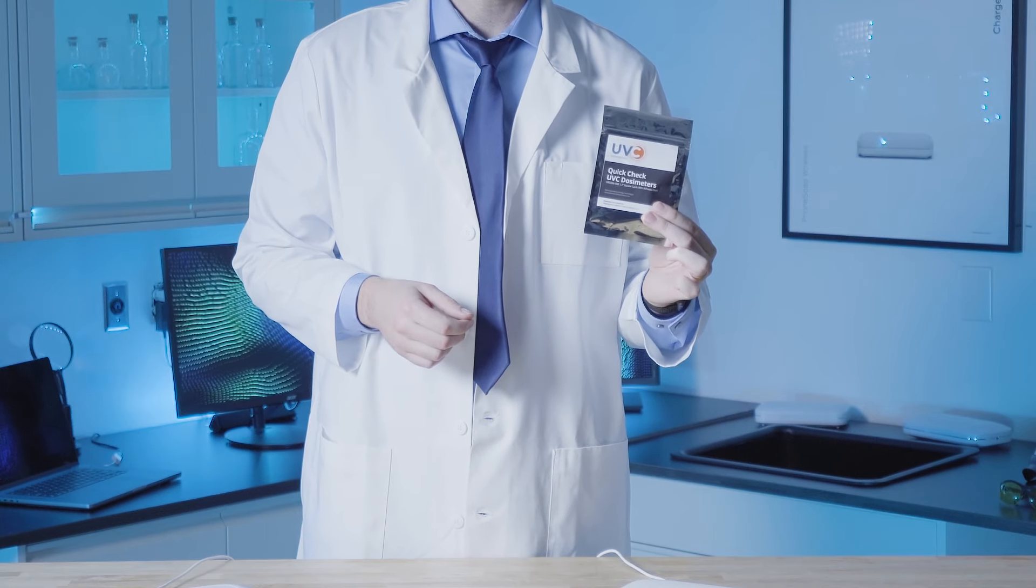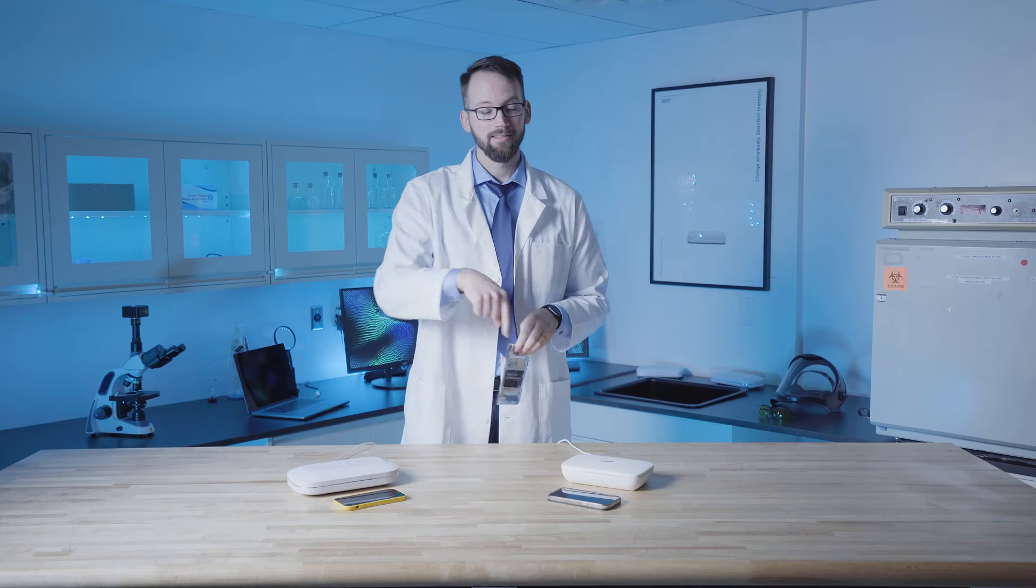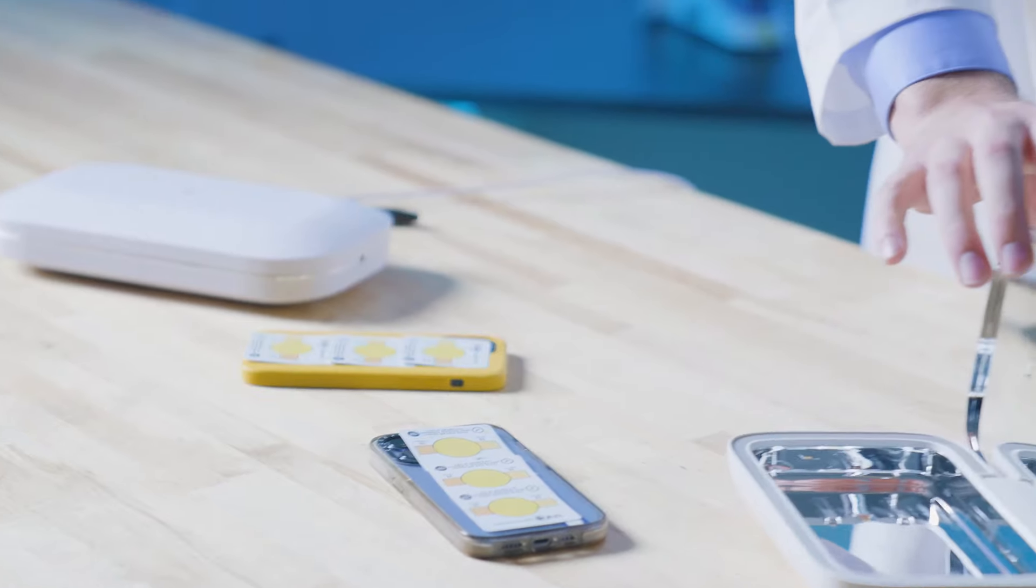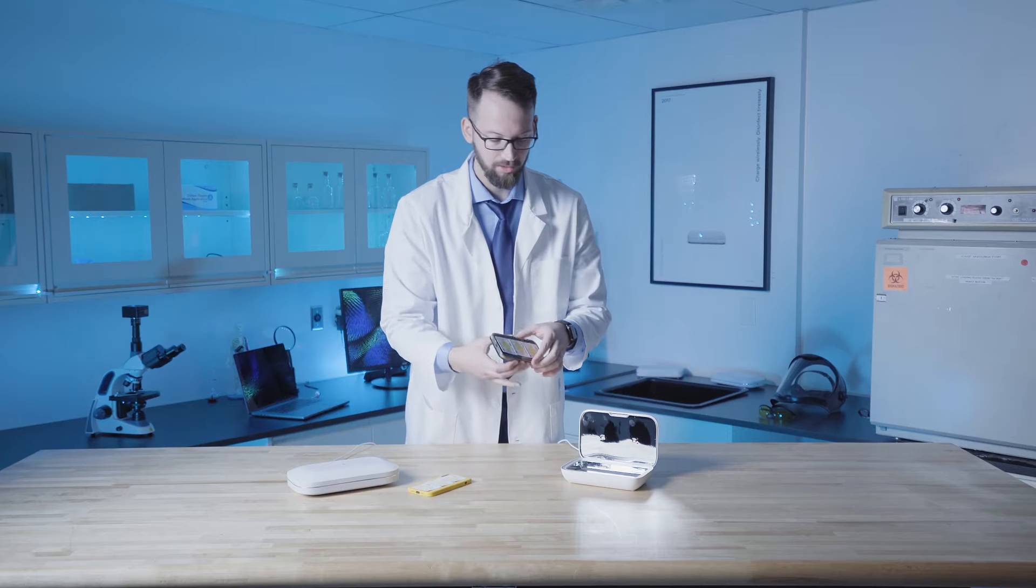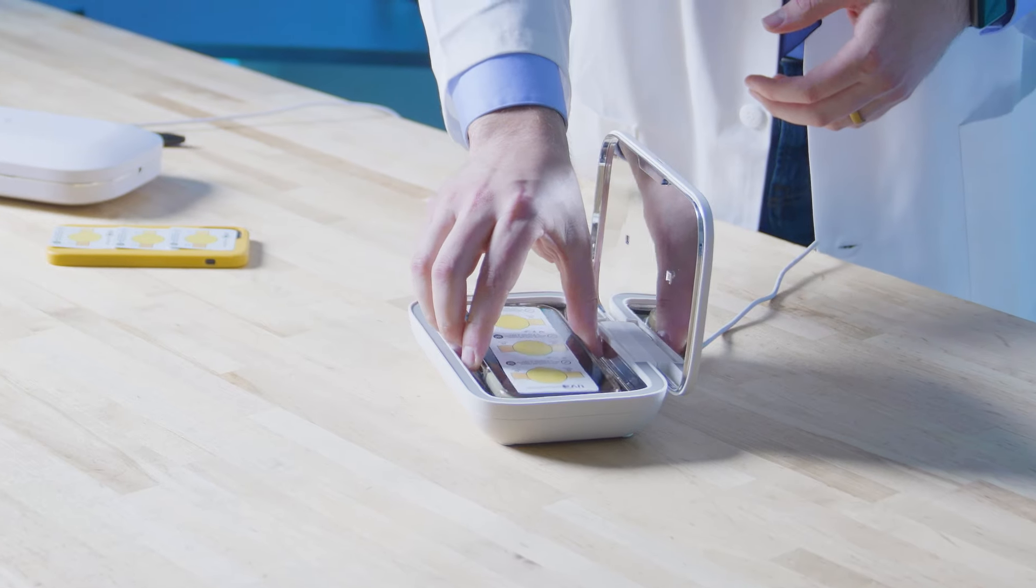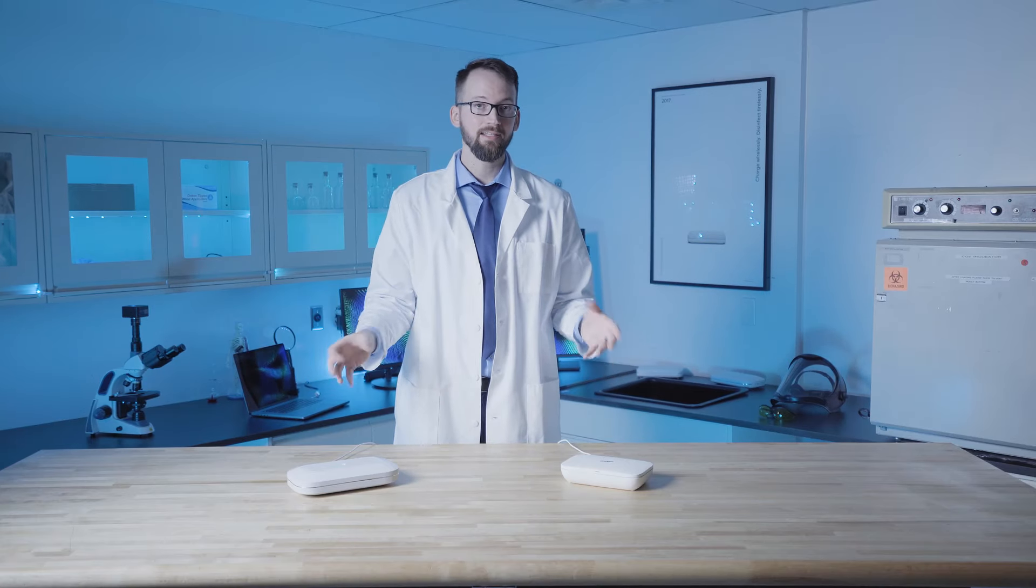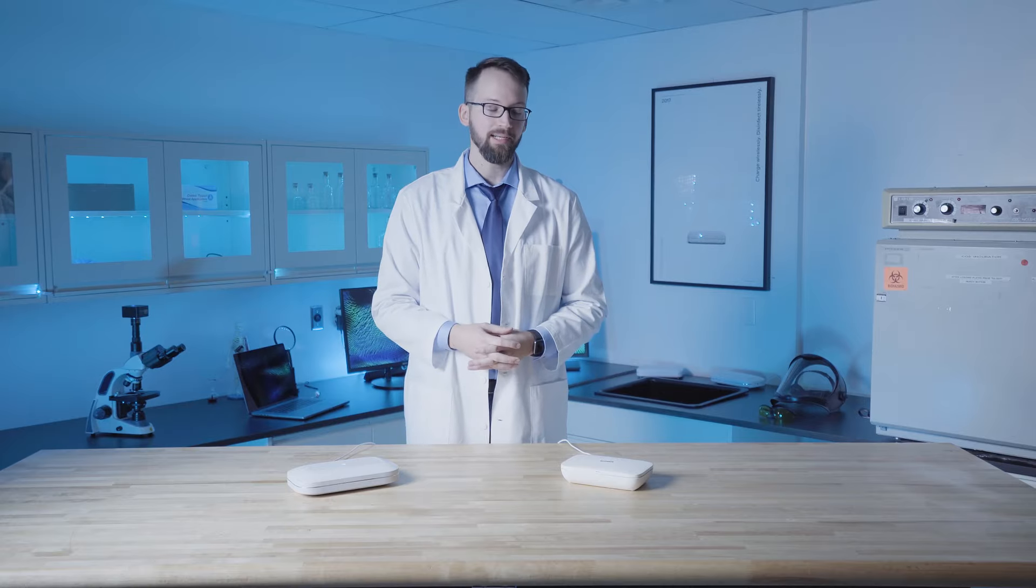We're going to be taking these quick check UV-C dosimeters to see what areas on the phones are getting disinfected. So this helps better visualize where exactly on the phone the light is hitting. Put them each in their UV sanitizers, put this one face down right here, and this one in the PhoneSoap. Put them through a normal cycle and see which points are getting hit by the light.